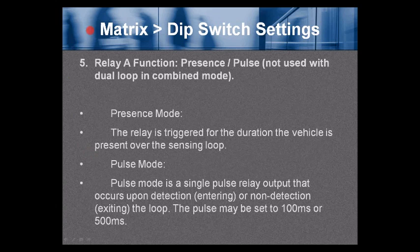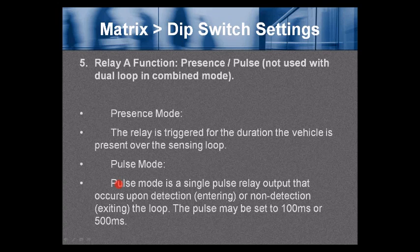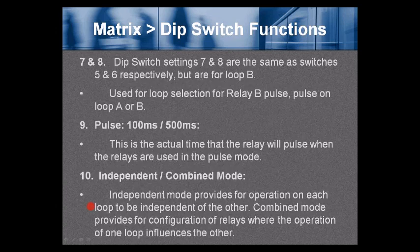DIP switch 5: Relay A function — presence or pulse (not used in dual loop combined mode). In presence mode, the relay is triggered for the duration the vehicle is present over the sensing loop. In pulse mode, a single pulse relay output occurs upon detection entering or non-detection exiting a loop. The pulse may be set to 100 milliseconds or 500 milliseconds.